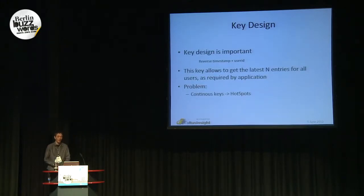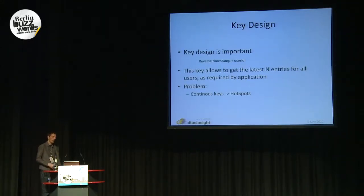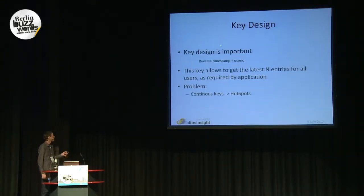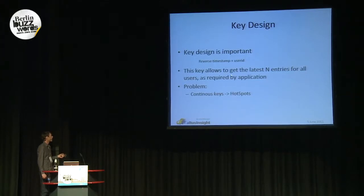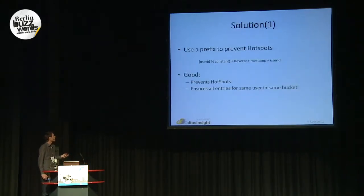That's why it is important to think about key design. For our application, it required that we must be able to get all the latest entries for all users. This means our key had to look like something like the reverse timestamp plus user ID. While this key works for our application, it comes with the problem that hotspots can appear. A common solution is to use something like a salt or a prefix.